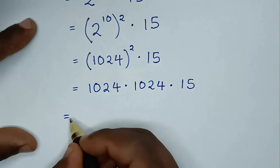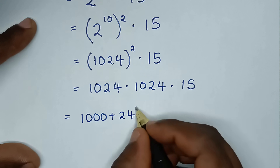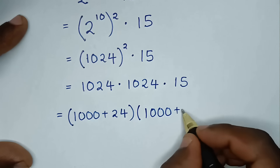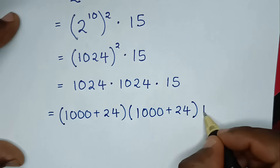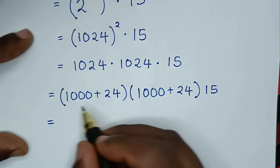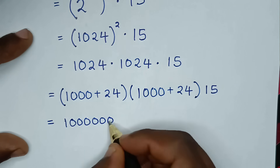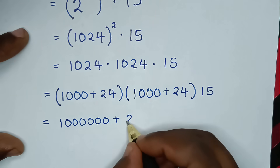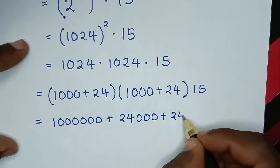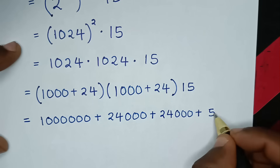Then into here, 1024 is the same as 1000 plus 24. Then bracket 1000 plus 24 bracket, then times this 15. Then it will be equal to: 1000 times 1000 gives 1,000,000. Then plus 1000 times 24 is 24,000. Then plus 24 times 1000 is 24,000. Then plus 24 times 24, which is 576.